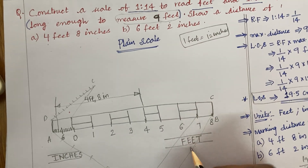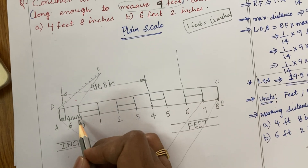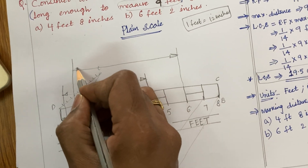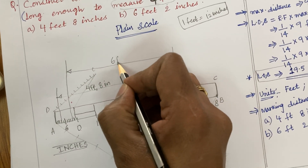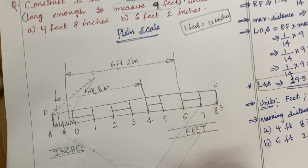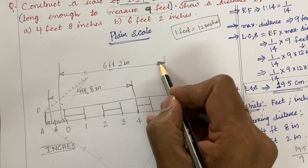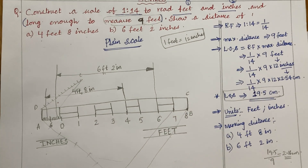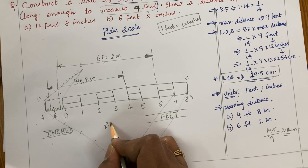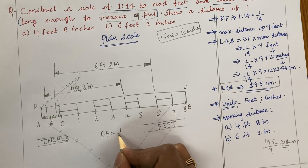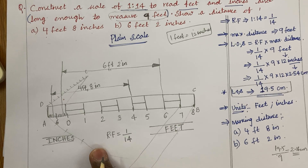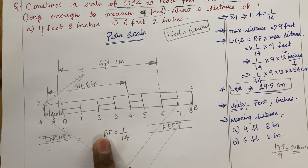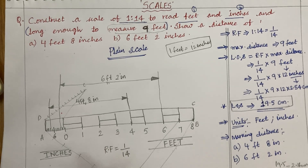The second marking distance is 6 feet 2 inches. Take 6 feet from the scale — this is the 6-feet mark — and the inches are marked from here: 0, 1, and 2. So this is the distance measuring 6 feet 2 inches. Mark the dimension line at center: '6 feet 2 inches.' You must also write the RF of the scale exactly at the center of the scale — RF is 1 upon 14. It is a reducing scale. The RF represents whether the scale is reducing, enlarging, or full size.